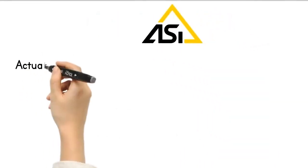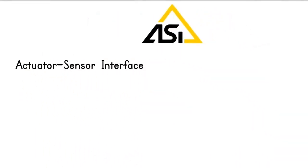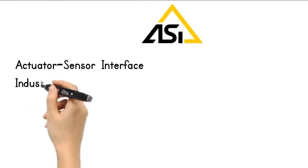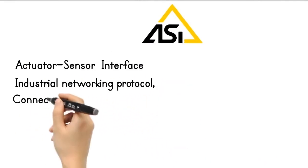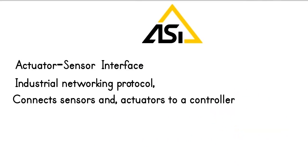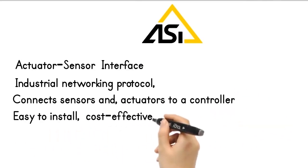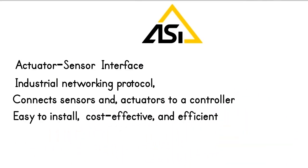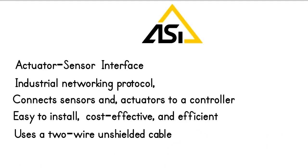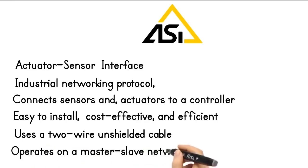ASI Protocol. ASI stands for Actuator Sensor Interface, an industrial networking protocol that connects sensors and actuators to a controller. ASI is easy to install, cost-effective, and efficient. It uses a two-wire unshielded cable for both power and data communication, reducing wiring costs. ASI operates on a master-slave network architecture.